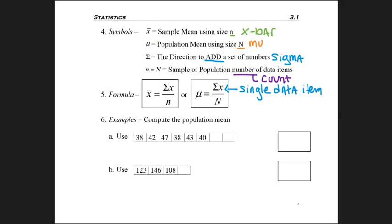So for 6a, I'm asked to compute or to calculate the population mean. And two of my numbers are missing, because I didn't want you to work ahead. So the two missing numbers are 39 and 42.